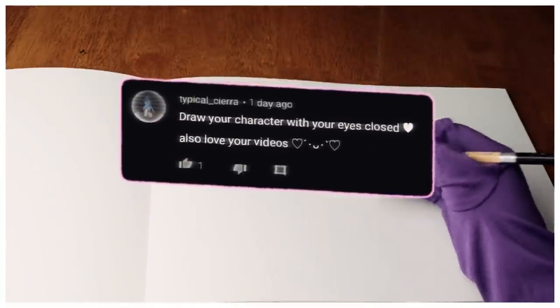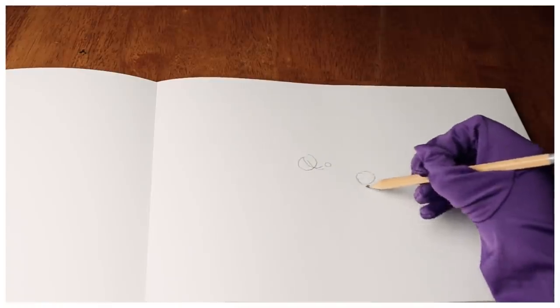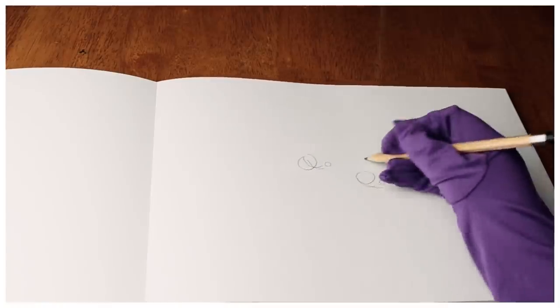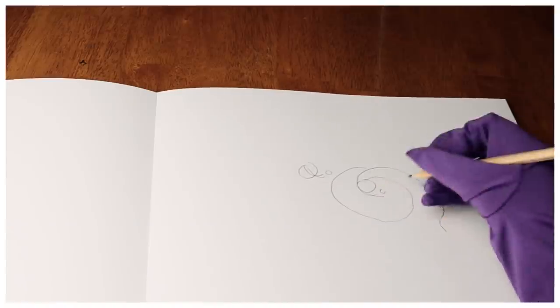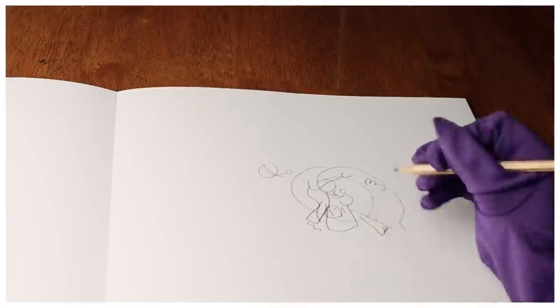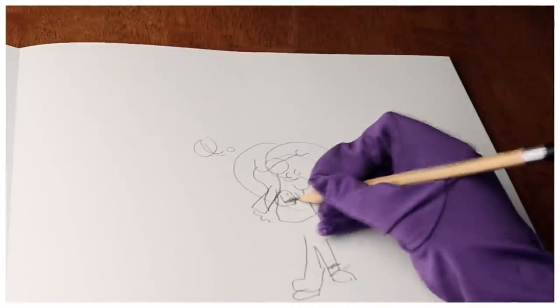Draw your character with your eyes closed. I honestly thought I was doing a good job with this, but little did I know how horrific this would turn out. Here's the head shape. The hair. The arms. And now both legs somehow down here. Some blushies. Yikes.